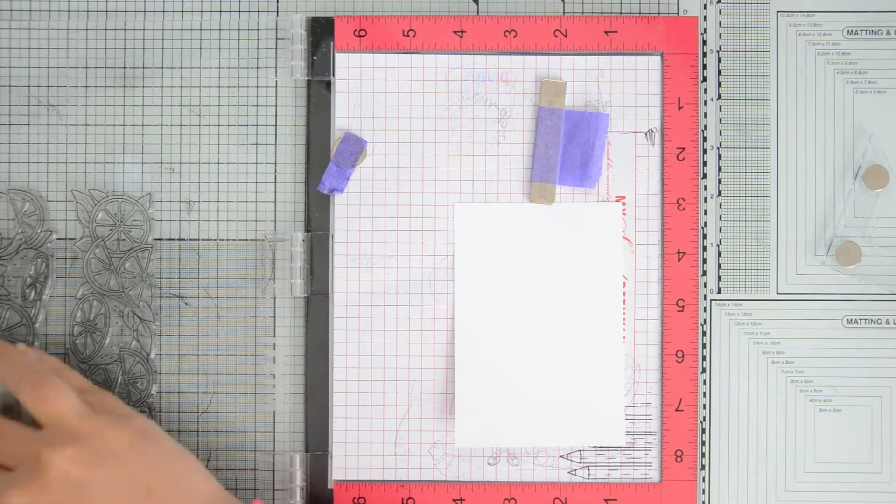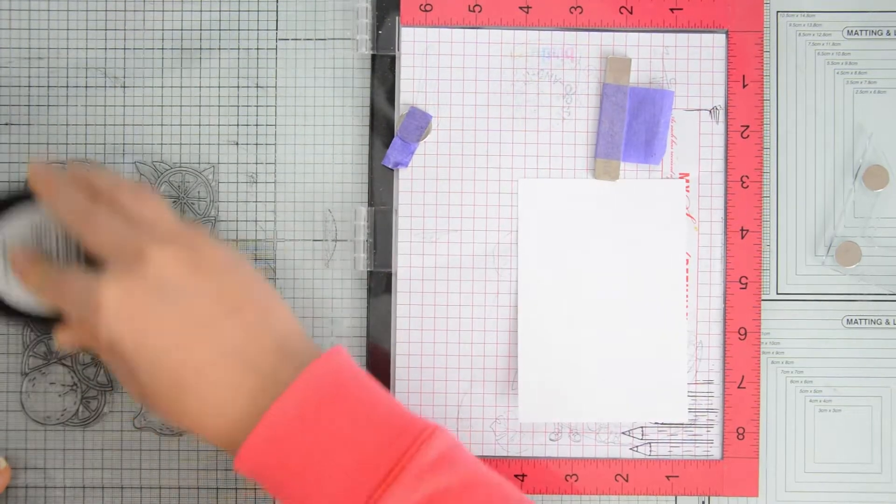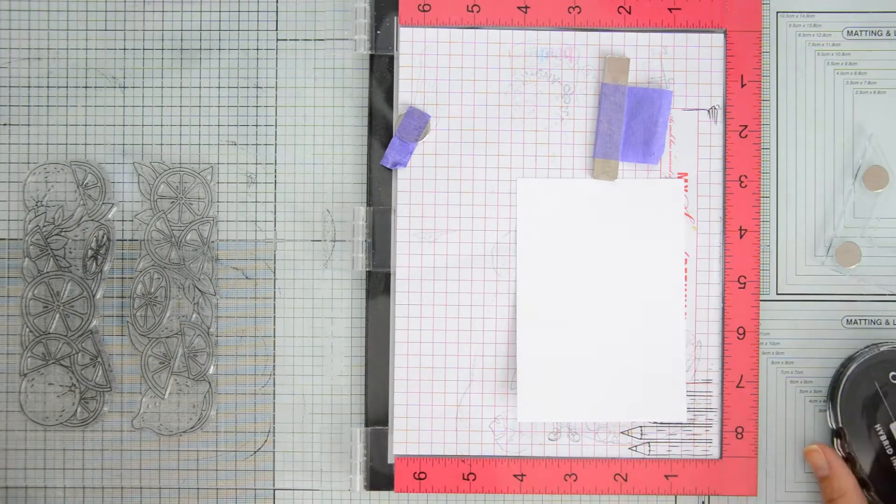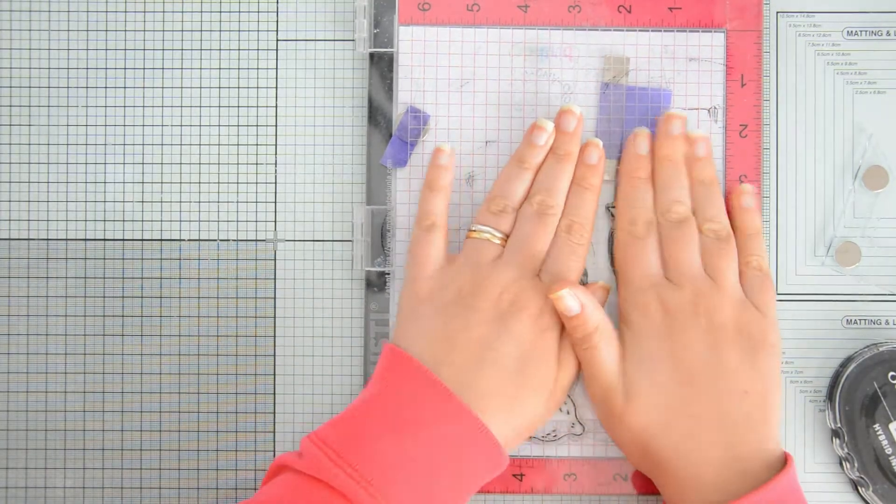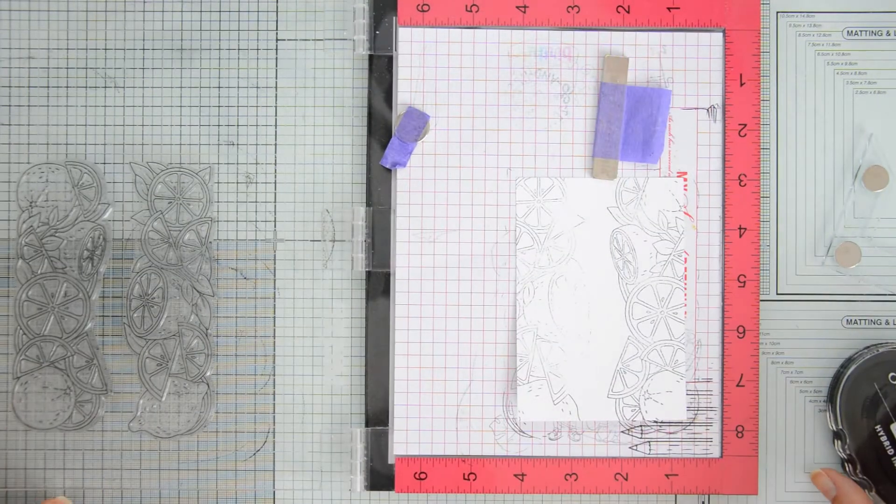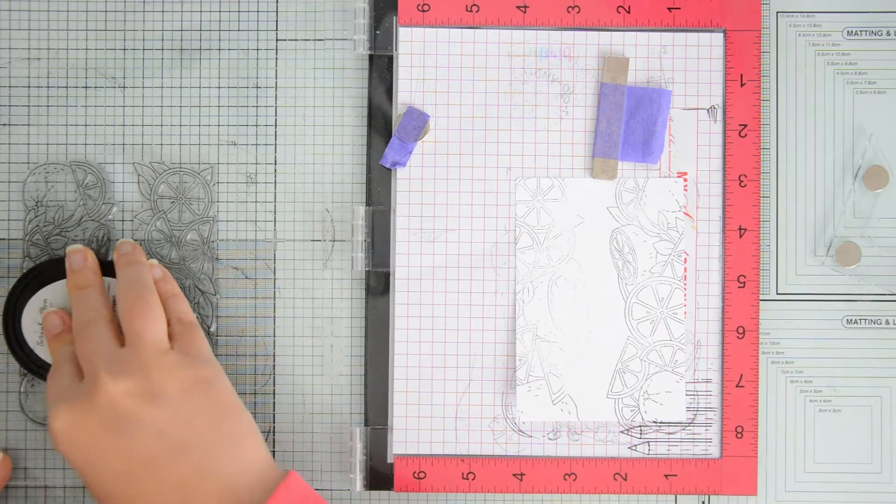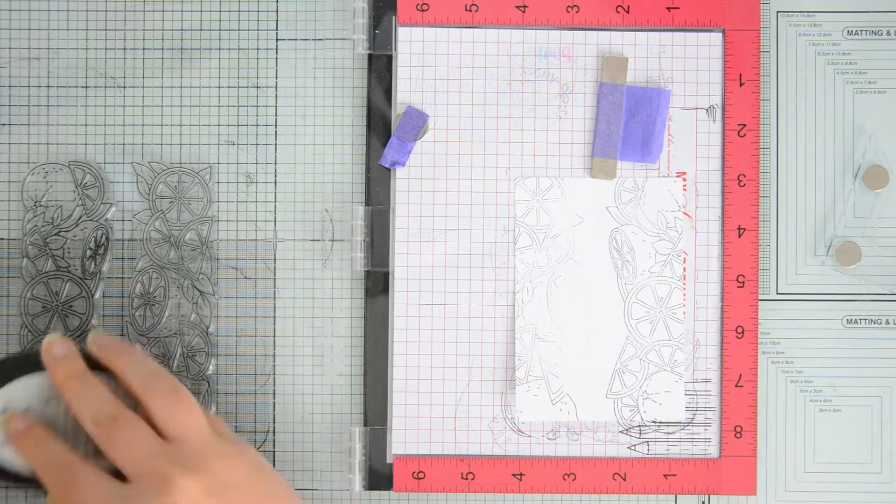I positioned it in my Misti so that I can go ahead and stamp the images multiple times. In this case I did not have to reposition my cardstock because it didn't move at all.